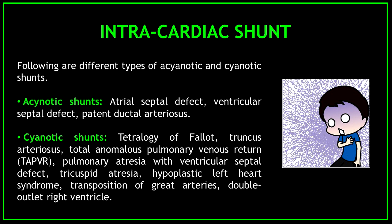In the acyanotic shunts, we have atrial septal defect, ventricular septal defect, and patent ductus arteriosus. And for the cyanotic shunts we have tetralogy of Fallot, truncus arteriosus, total anomalous pulmonary venous return, pulmonary atresia with ventricular septal defect, tricuspid atresia, hypoplastic left heart syndrome, transposition of great arteries, and double outlet right ventricle.